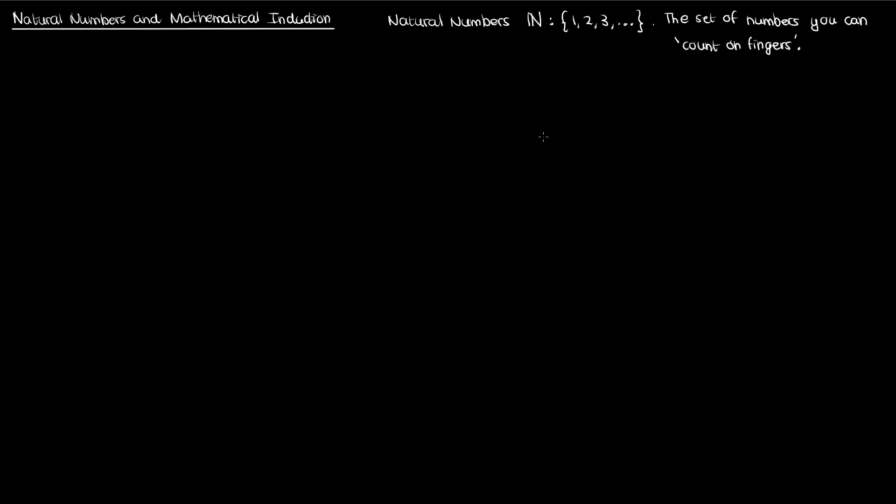0 isn't included, which makes sense intuitively. It's hard to imagine a 0 finger. You can't really count 0 on your finger, so it's not a natural number. However, 1, 2, 3, 4, and so on, they're all natural numbers. I will note that some people do include 0 as a natural number. I personally don't, and neither do the books I read. If I've got a set of numbers 0, 1, 2, 3, etc., I choose instead to call that the set of whole numbers, or W.